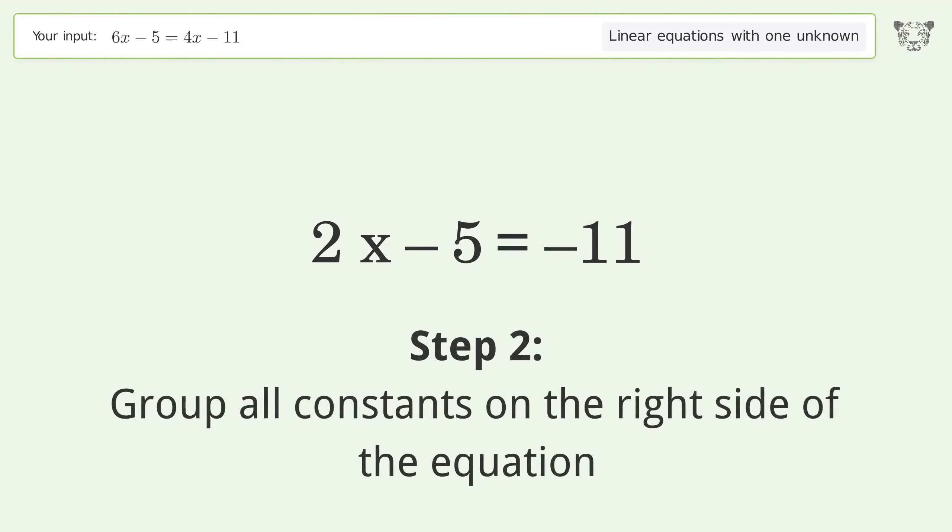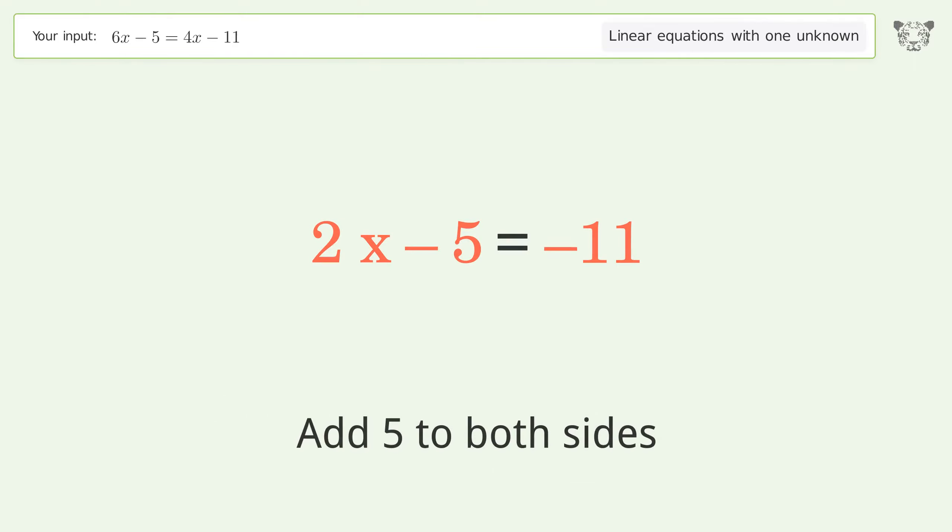Group all constants on the right side of the equation. Add 5 to both sides. Simplify the arithmetic.